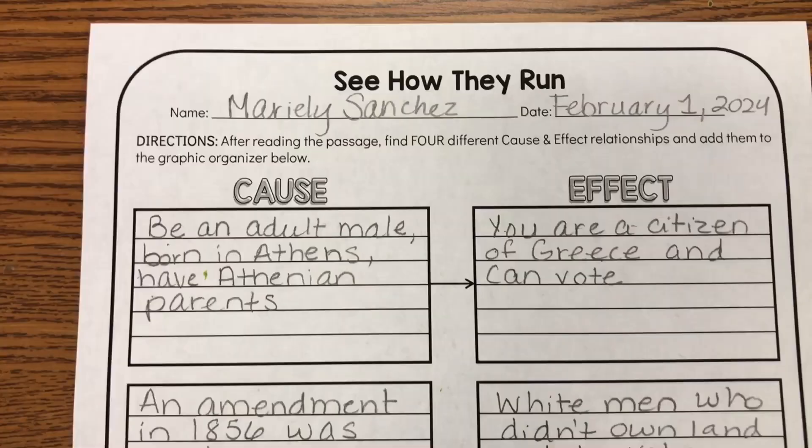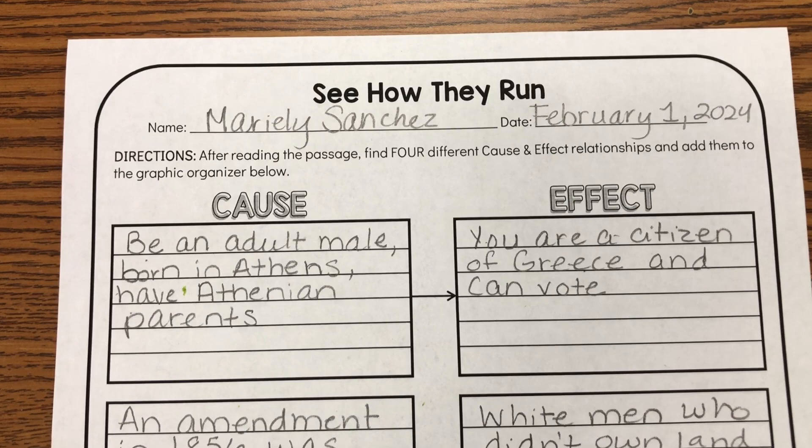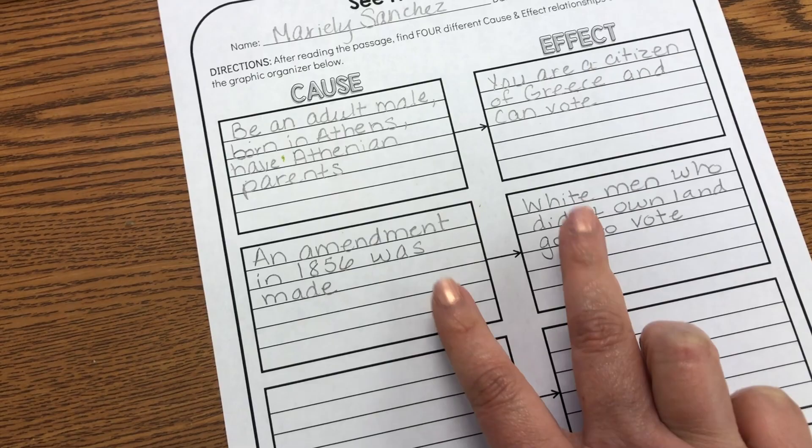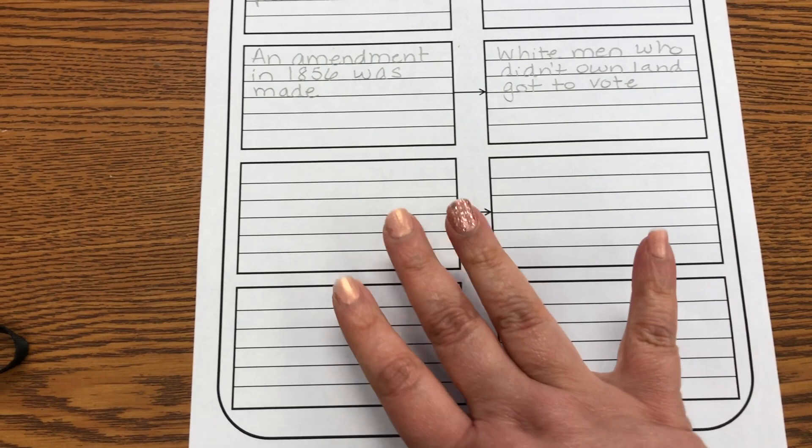For today I started with my Block 2 — my ELL group — and we read 'See How They Run,' our anchor text, about halfway through. It's a lengthy passage, and I wanted to guide them toward discovering cause and effect relationships. I gave them a graphic organizer to accumulate those relationships as soon as they spotted them. We started with the first two pages, wrote those cause and effect relationships, then looked at the next two pages and chose another. The rest of the passage they'll look for two more to fill out the organizer.